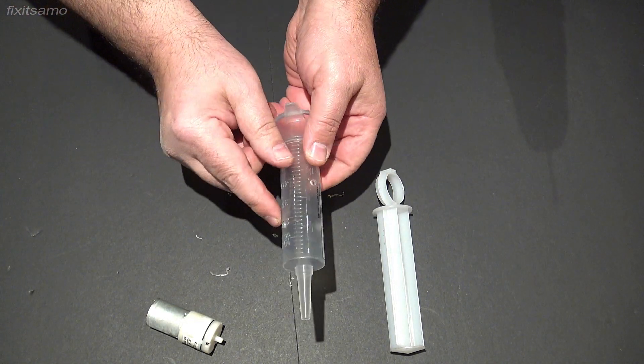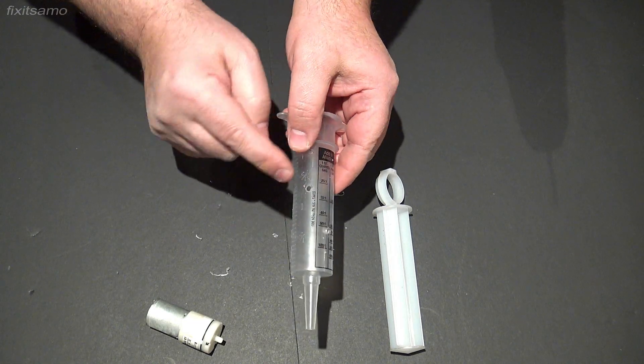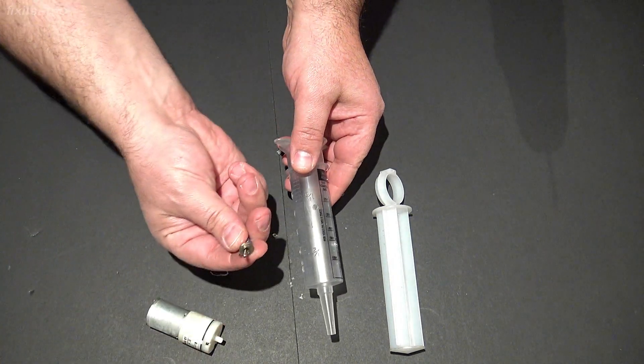There you go. So we got two holes for air circulation and this one is for the on off switch.